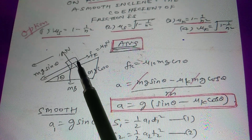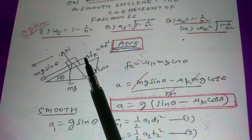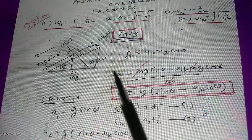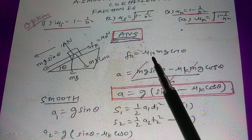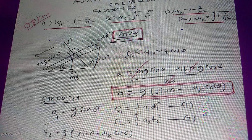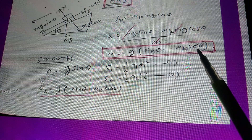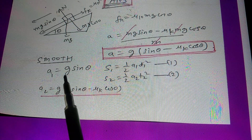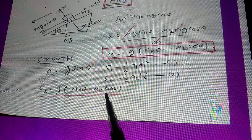Let t1 be the time on smooth and t2 on rough, so t2 = n·t1. For the block on incline: acceleration a = g(sin θ − μk·cos θ). On smooth surface: a1 = g·sin θ. On rough surface: a2 = g(sin θ − μk·cos θ). Using S = ½a·t² and since distance is the same for both cases: ½a1·t1² = ½a2·t2².